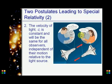So the velocity of light, c, is constant and will be the same for all observers, independent of their motion relative to the light source.